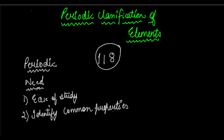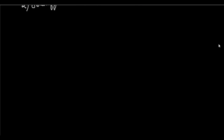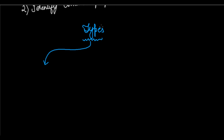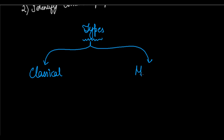Now looking at the types of classification we have had in history, broadly we can classify these methods into two types. The first method is the classical method and the second method is the modern method.